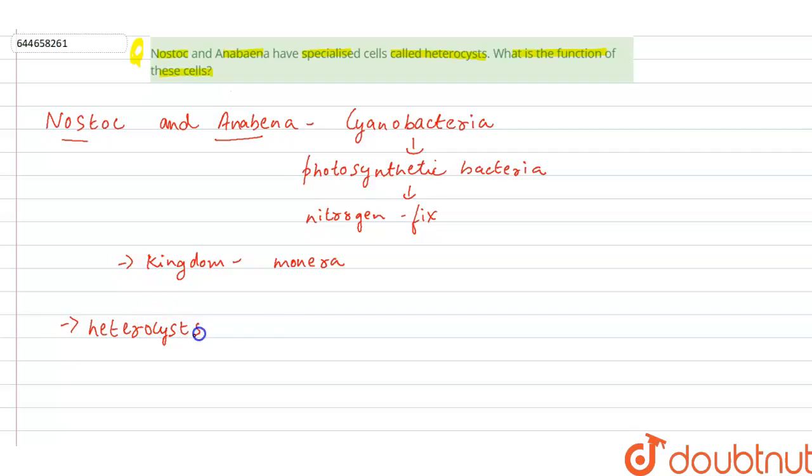What are these heterocysts? These heterocysts are thick-walled cells. They contain enzyme nitrogenase.